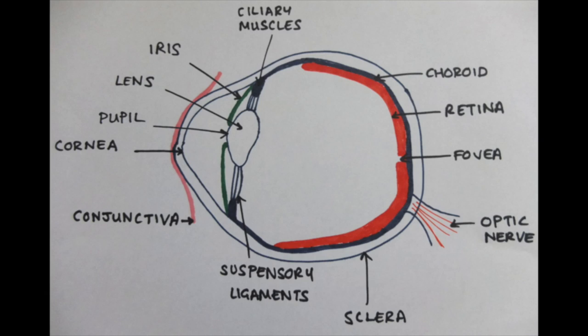Hi, today I'm going to be teaching you the eye. It's really complicated, but it's really interesting because obviously the eye is super important to help us see, so it'd be quite cool to know exactly what's going on. It's really important that you know how to label the diagram, so find a good diagram, make sure you've got all those labels sorted and make sure you've spelled them right.